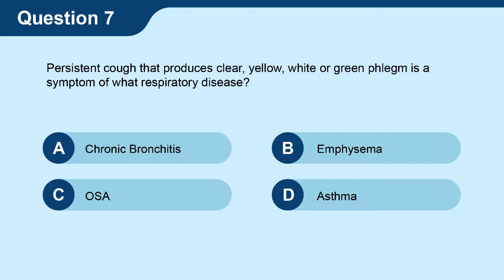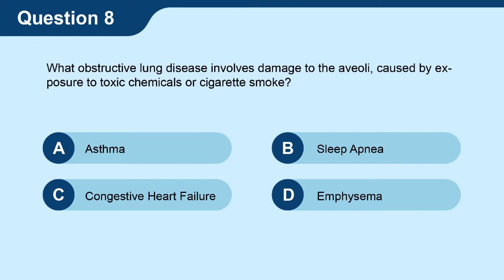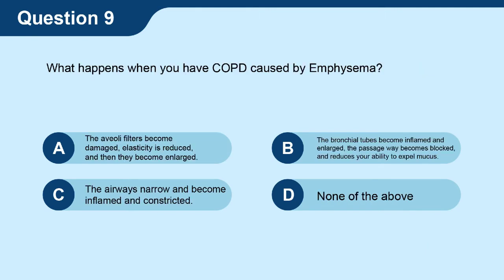Question seven: persistent cough that produces clear, yellow, white, or green phlegm is a symptom of what respiratory disease? Question eight: what obstructive lung disease causes damage to the alveoli caused by exposure to toxic chemicals or cigarette smoke?